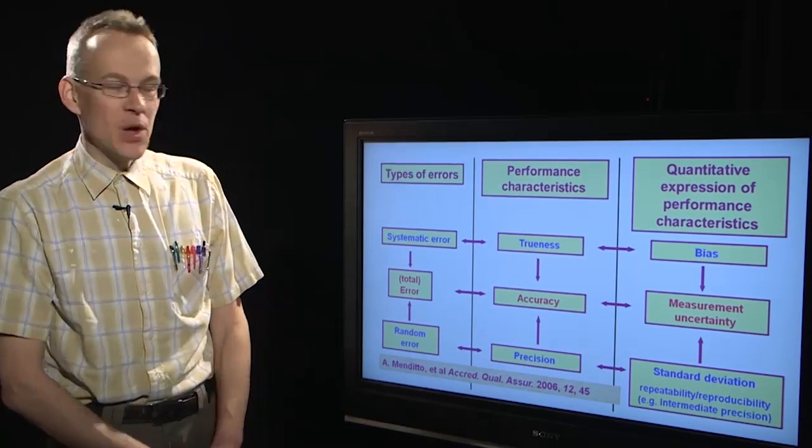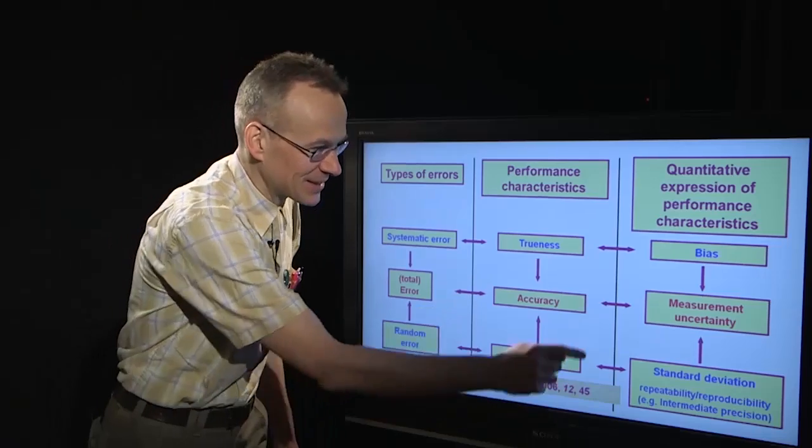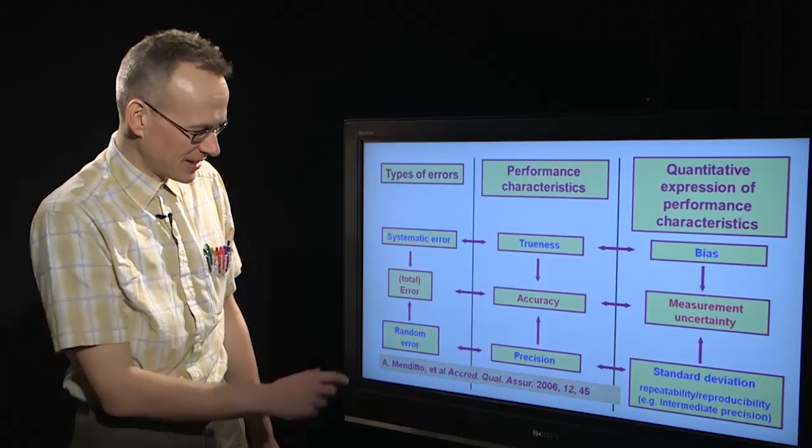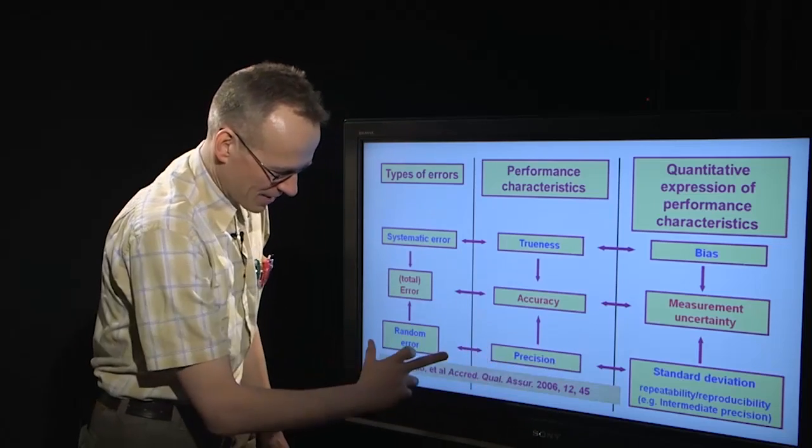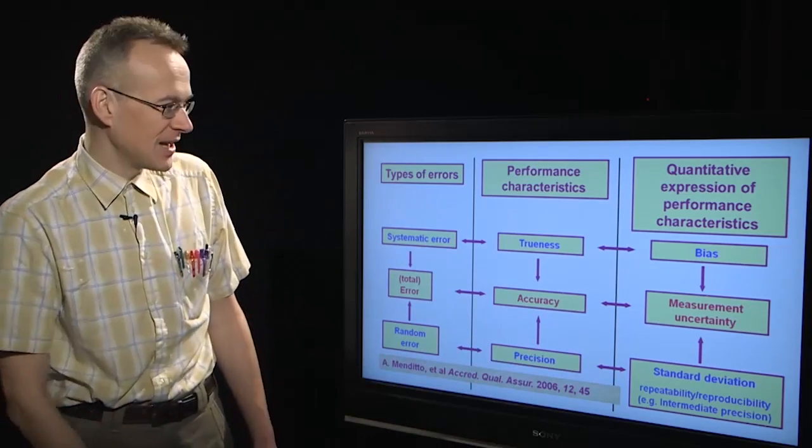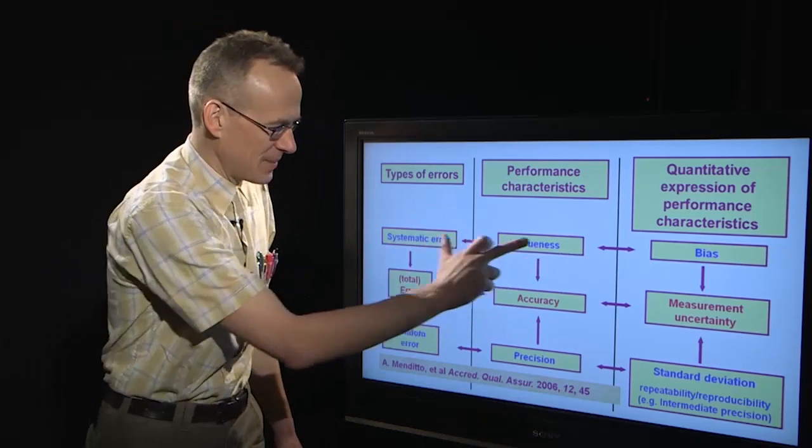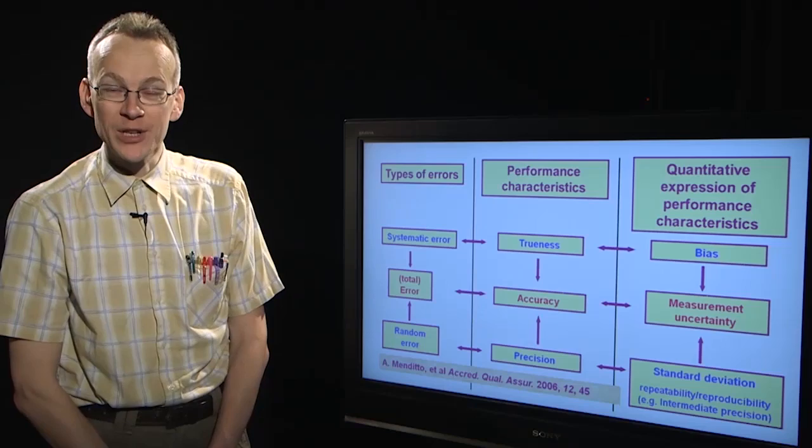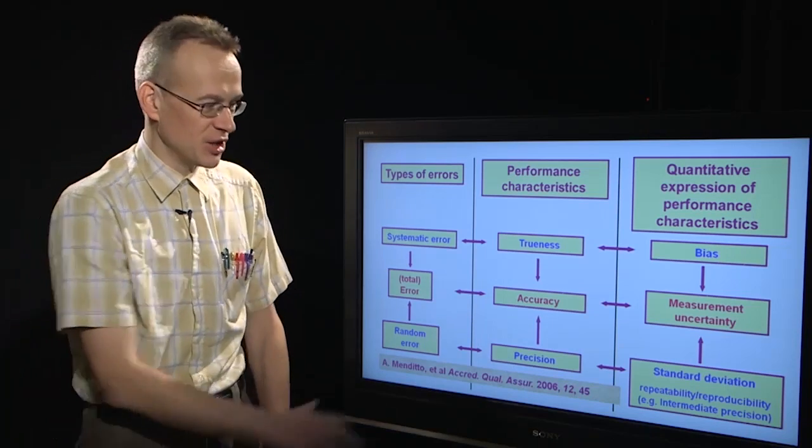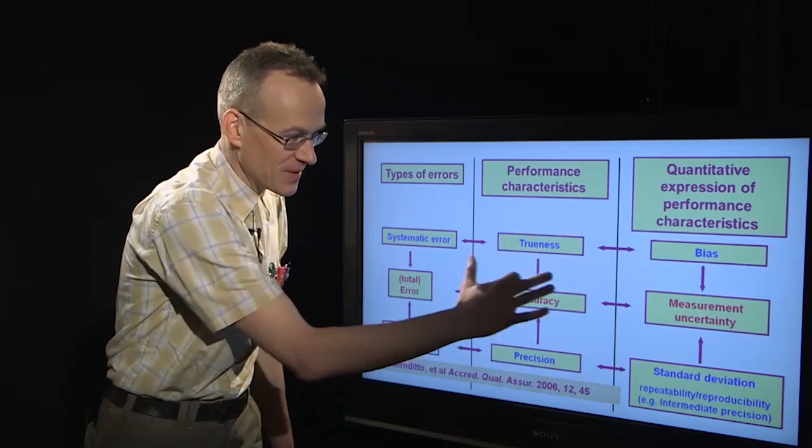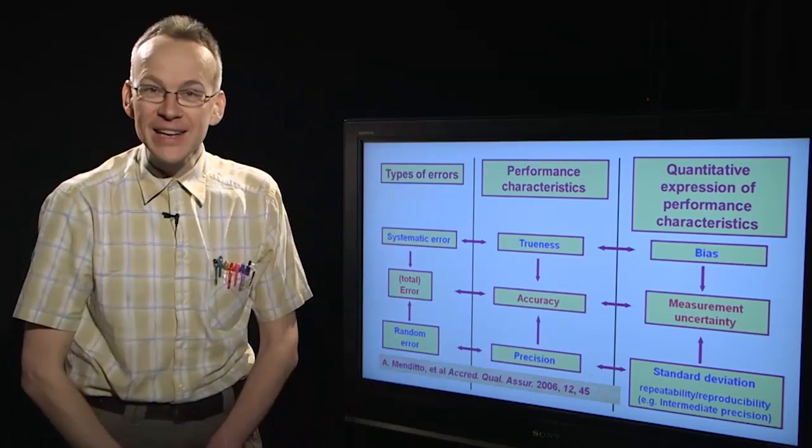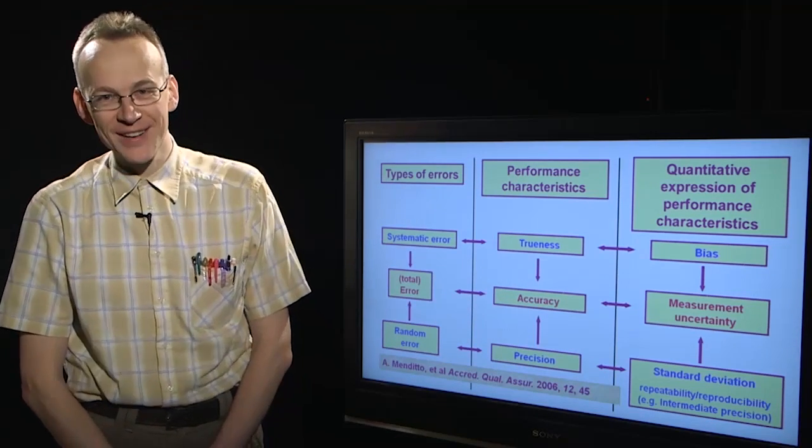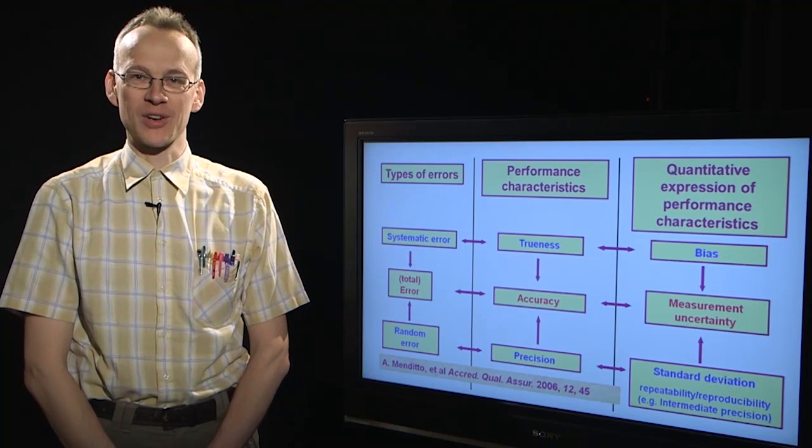Instead, we use performance characteristics which estimate errors. The estimate of random error is precision, the estimate of systematic error is called trueness. Trueness and precision jointly give accuracy, meaning if a measurement method is true and precise at the same time, we can call it accurate.